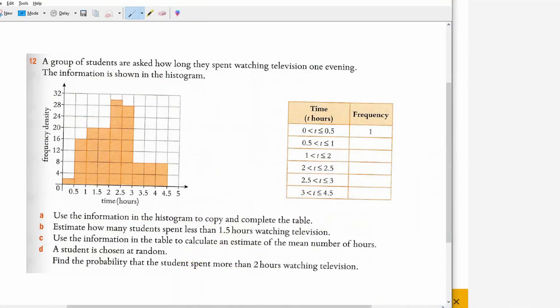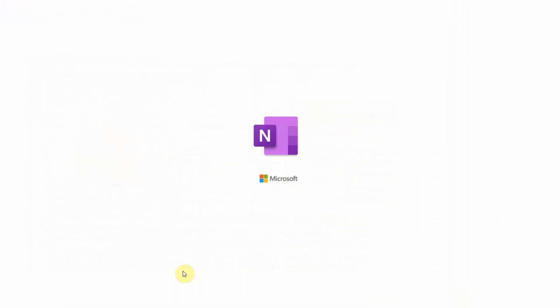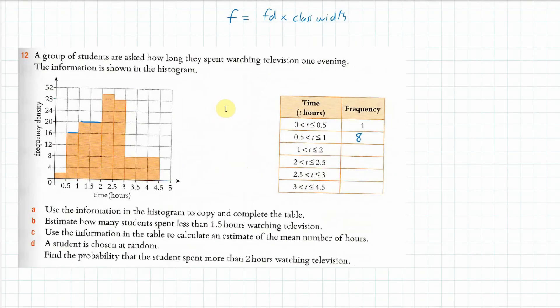Going back to the screen: 1 to 2 should be 10. Then 2 to 2.5 — class width of 0.5 and frequency density of 30 — so half of 30 is 15.